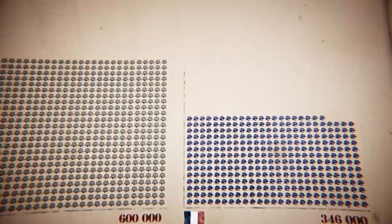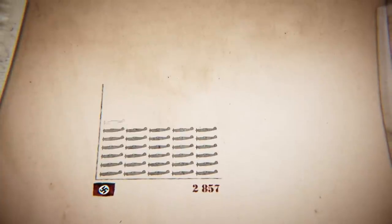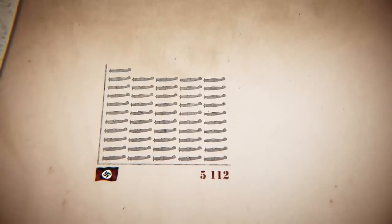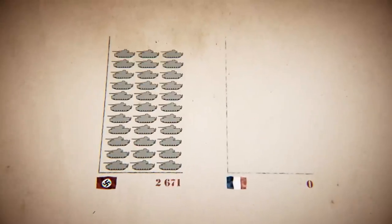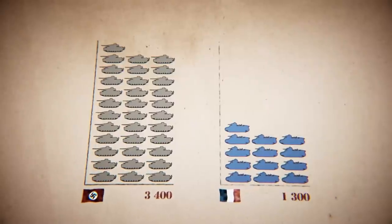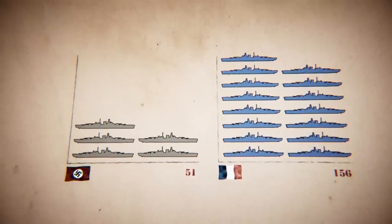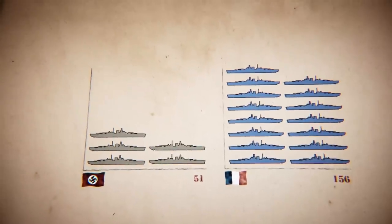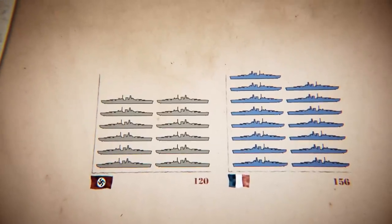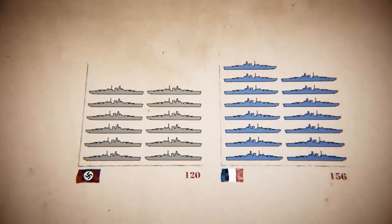The numbers were even more uneven in other sectors. Germany had 5,112 aircraft compared to France's 890, around 3,400 tanks compared to 1,300. And though the French navy had tripled the size of the Germans, Hitler signed a naval accord with Great Britain that would allow him to more than double his fleet in the next three years.